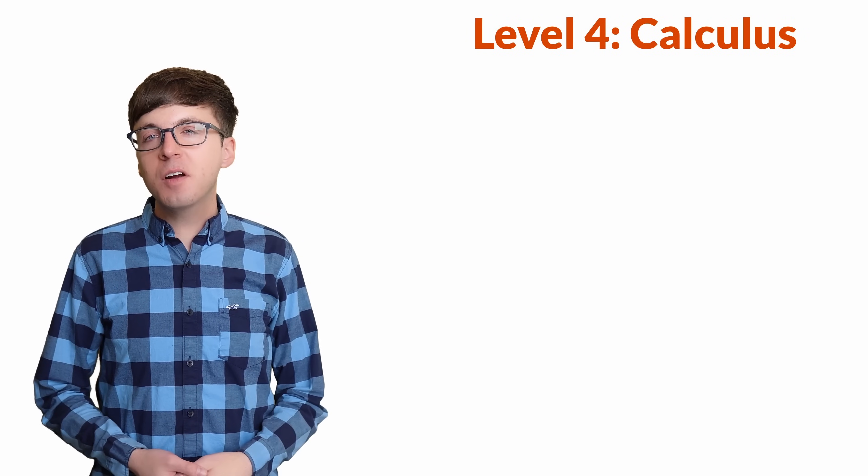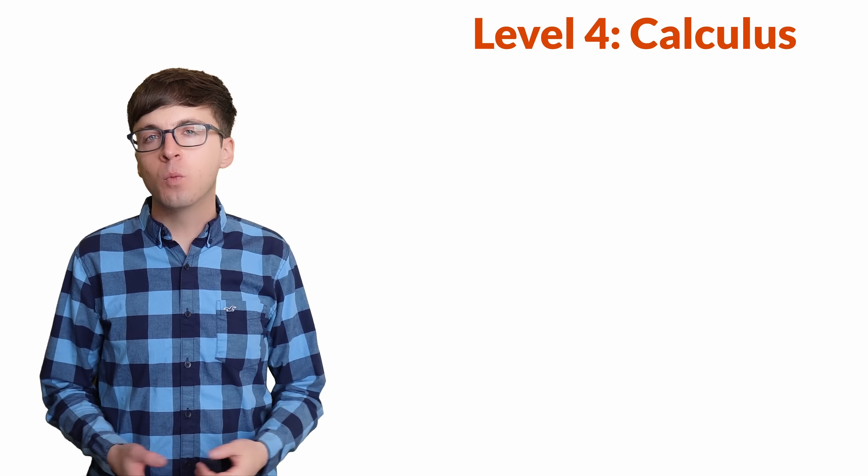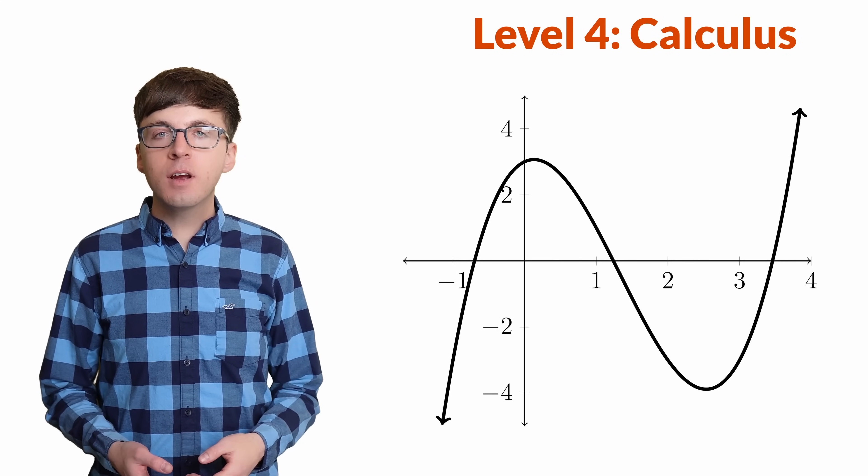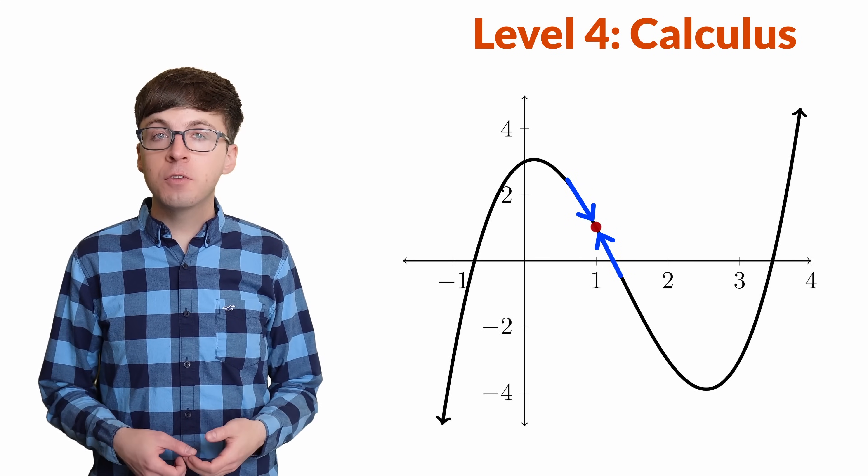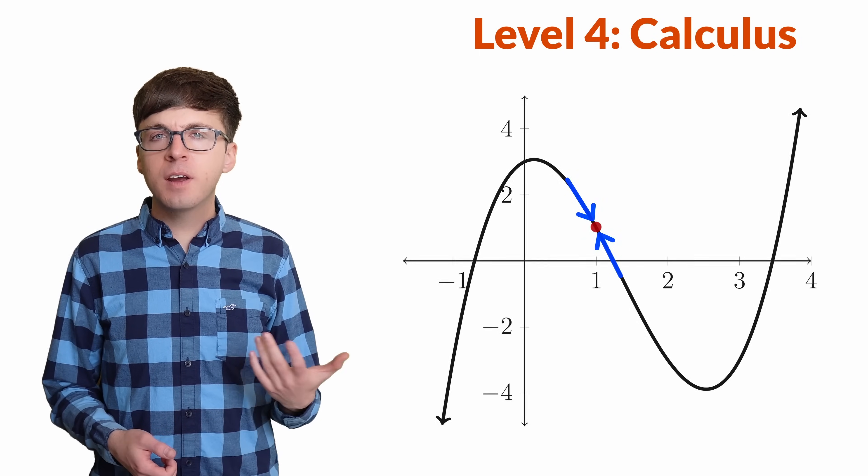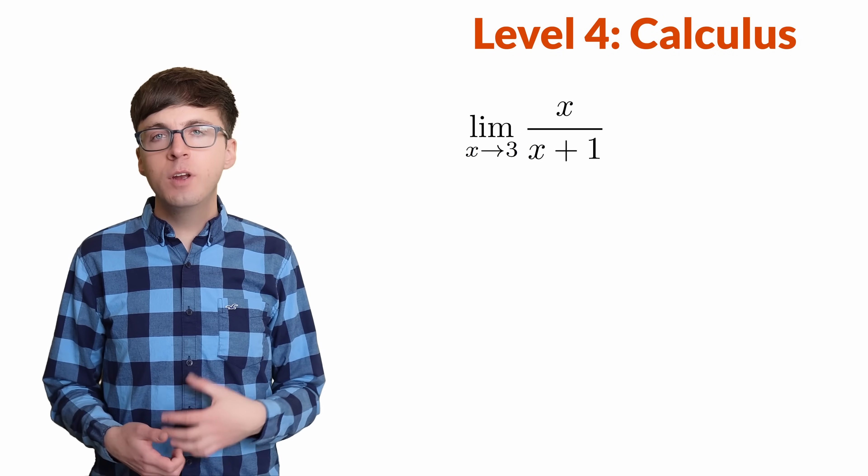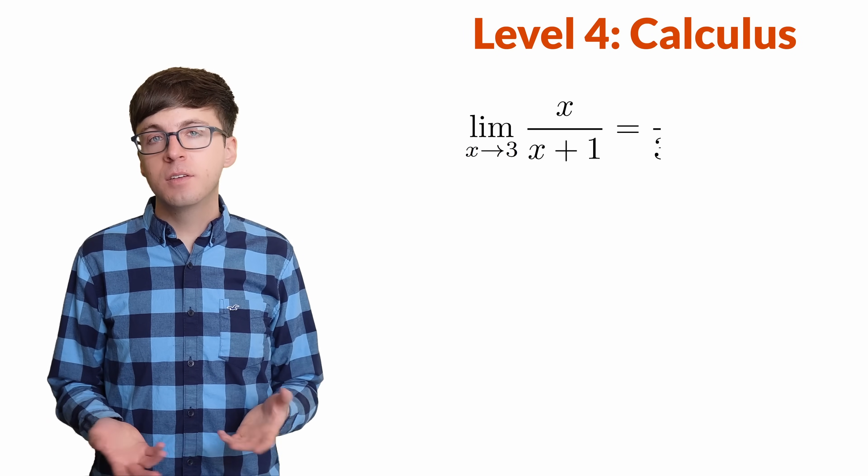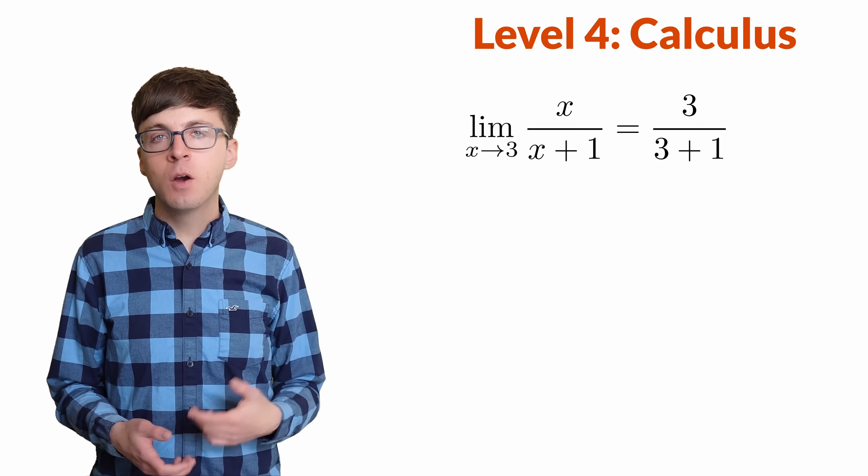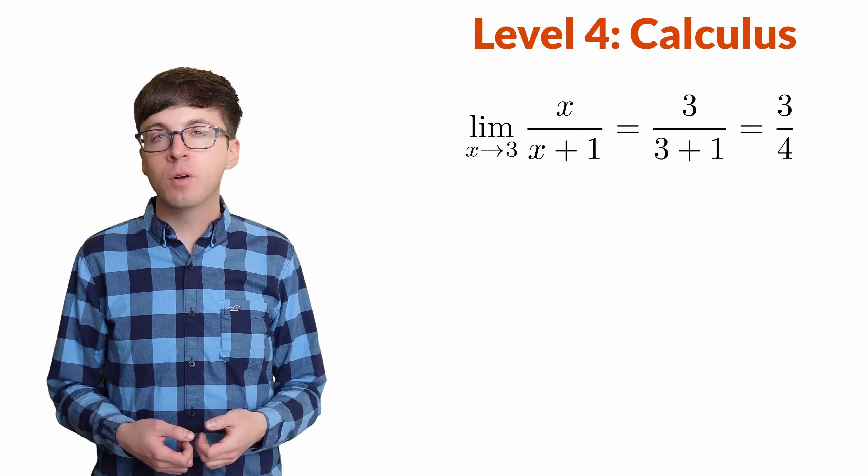For level 4, let's talk about a reason that we might not want to define 0 to the 0 to be 1. In calculus, we learn how to take limits of functions. For continuous functions, we can find a limit by just plugging in the value. For example, to find the limit as x approaches 3 of x over x plus 1, we can just plug in 3 for x to get 3 over 3 plus 1 or 3 fourths.